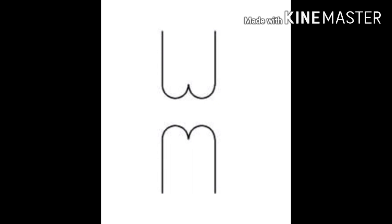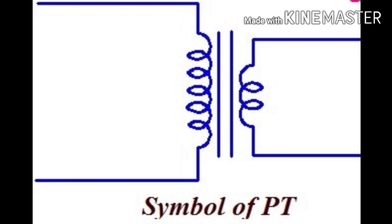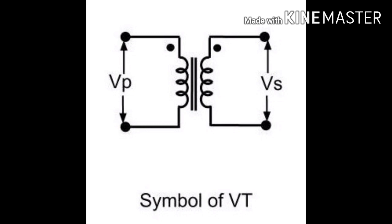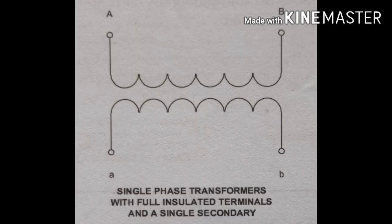Generally, the secondary voltage and current are determined by the primary to secondary windings ratio — specifically, the ratio of the number of turns in the primary to the number of turns in the secondary.